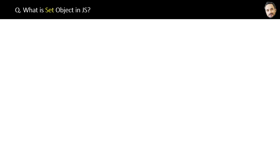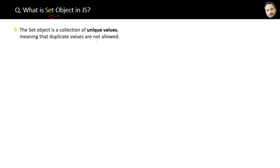What is a Set object in JavaScript? The Set object is a collection of unique values. Remember this word — unique — meaning that duplicate values are not allowed.